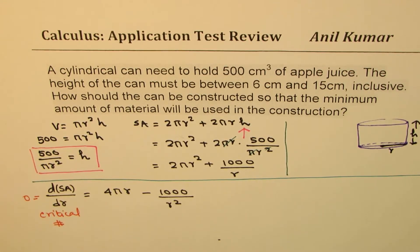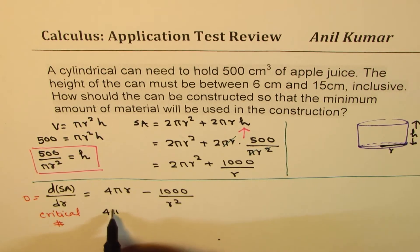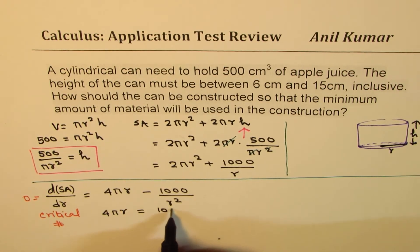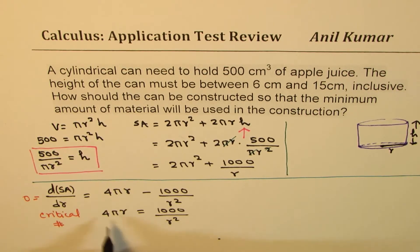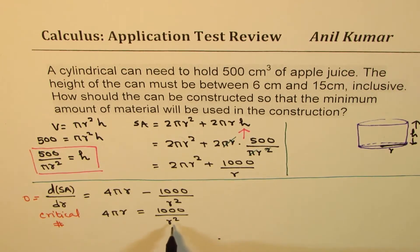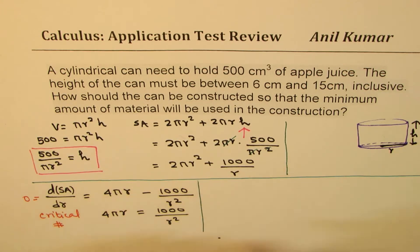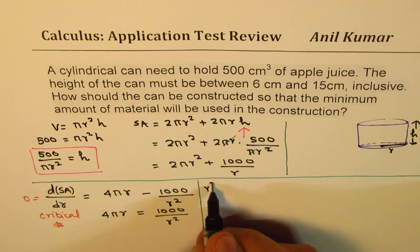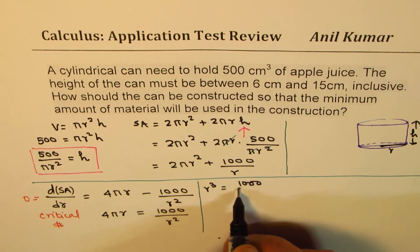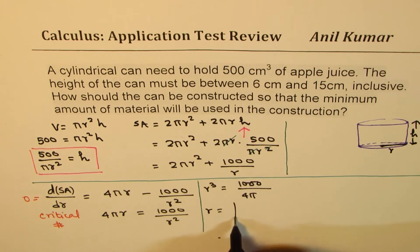So that really means that 4πr equals 1000 over r² and if we cross multiply, we get r³ equals, let me write down here, what we get here is r³ equals 1000 divided by 4π or r equals cube root of 1000 over 4π. So let's find this answer.